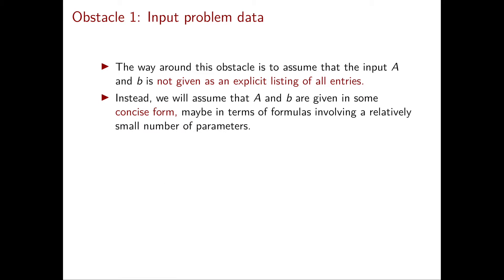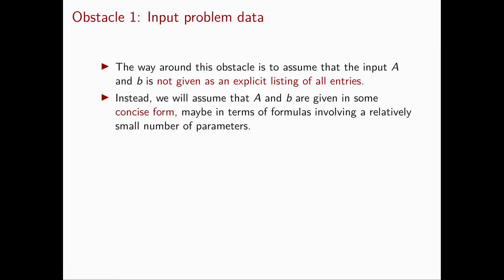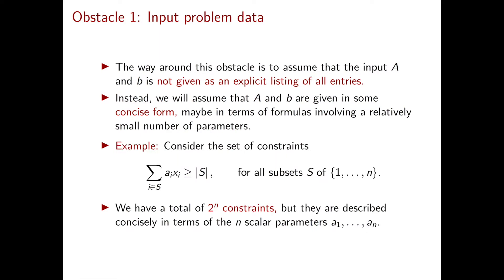The way around this problem is to assume that our system AX ≥ B is not given explicitly by listing all the entries in A and in B. Instead, we assume that our system AX ≥ B is given in a concise way. This sounds very strange, so let me give you immediately an example.